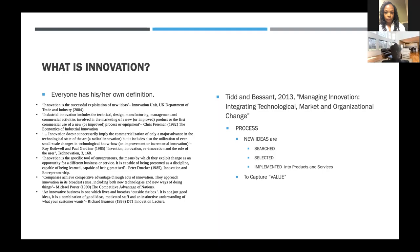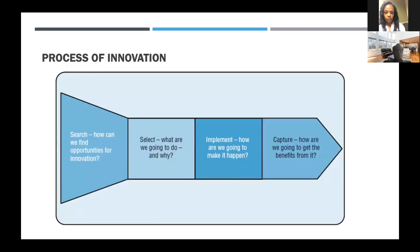In our framework, innovation is treated like a PhD research program. Basic research is essentially a literature review. From that, you select what tools you're going to use to tackle your problem, and then through research activities you produce results. Those are basically the process of innovation: search, select, implement, and capture.